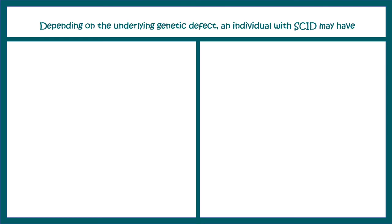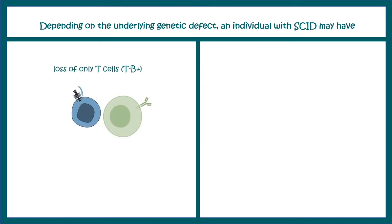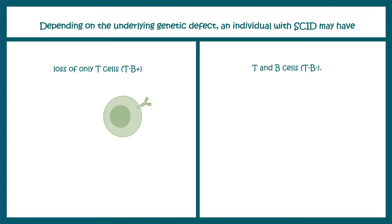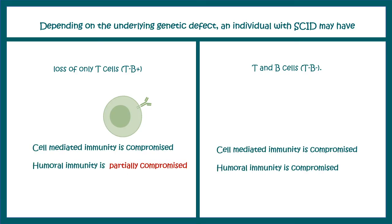Depending on the underlying genetic factor, an individual with SCID might have total loss of both T and B cells, or loss of only T cells while B cells are still present. Even if B cells are present, they would not undergo somatic hypermutation or affinity maturation, because these processes require T-cell mediated B-cell activation. T-cell independent B-cell activation does not lead to these processes, so even if there is some antibody-mediated response, it would be ultra-weak and mostly non-specific.